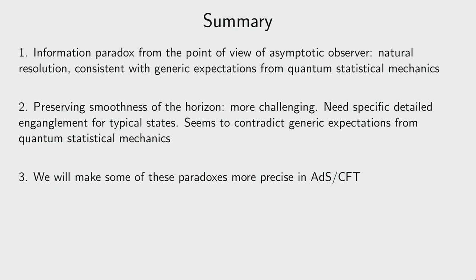To summarize: the information paradox from the point of view of an asymptotic observer has a natural resolution consistent with quantum statistical mechanics — exponentially small corrections to Hawking's observables can unitarize the radiation. However, if you want to preserve the smoothness of the horizon, you run into more challenging problems involving fine-tuned entanglement between interior and exterior that seems to contradict generic statistical mechanics. From tomorrow onward we'll address these questions in the framework of AdS/CFT, where all statements become mathematically more precise.